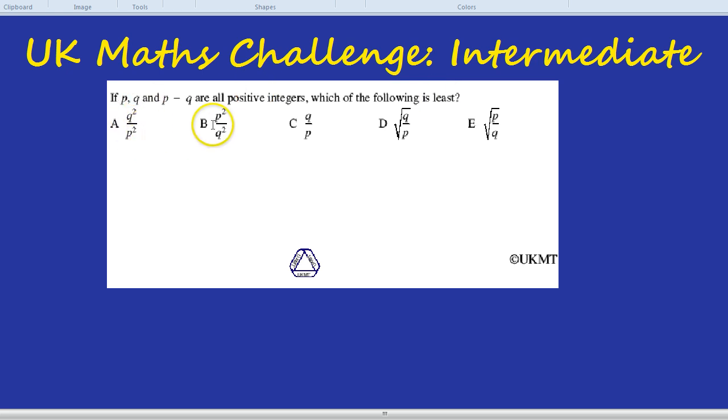The options are: Q squared over P squared, P squared over Q squared, Q over P, the square root of Q over P, or the square root of P over Q.